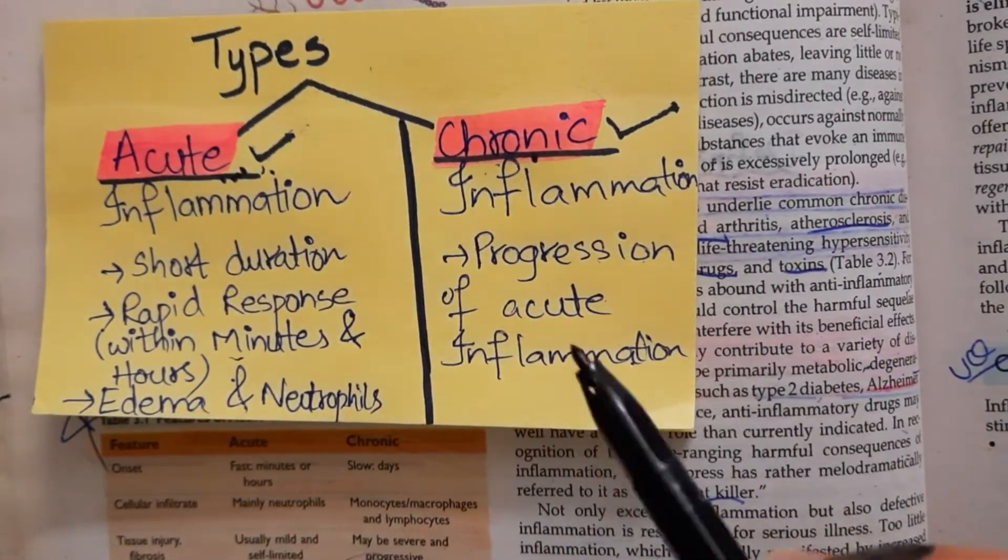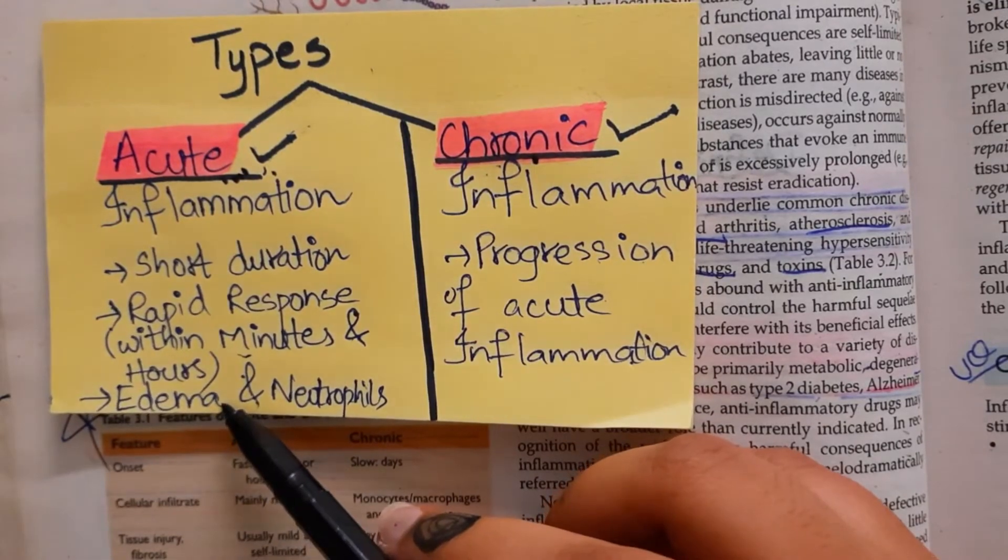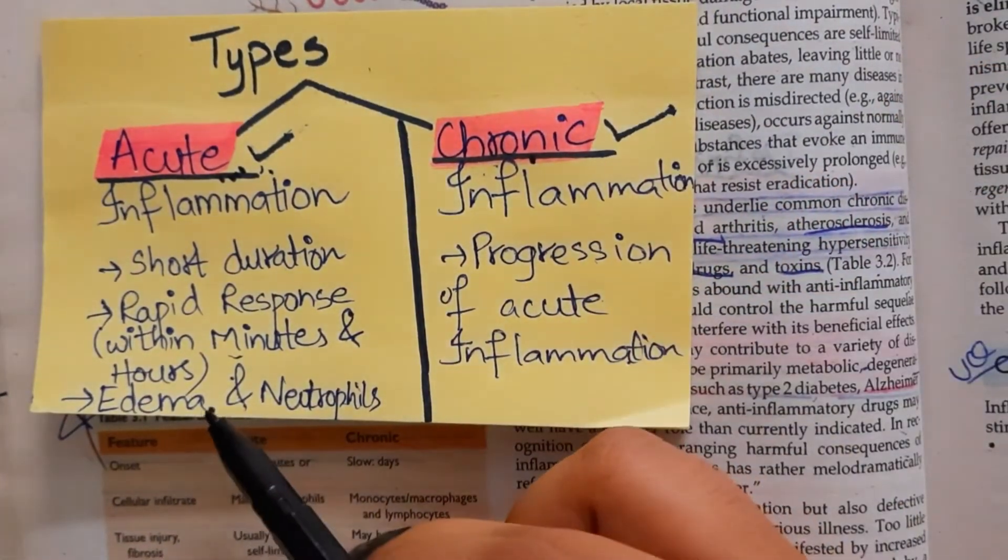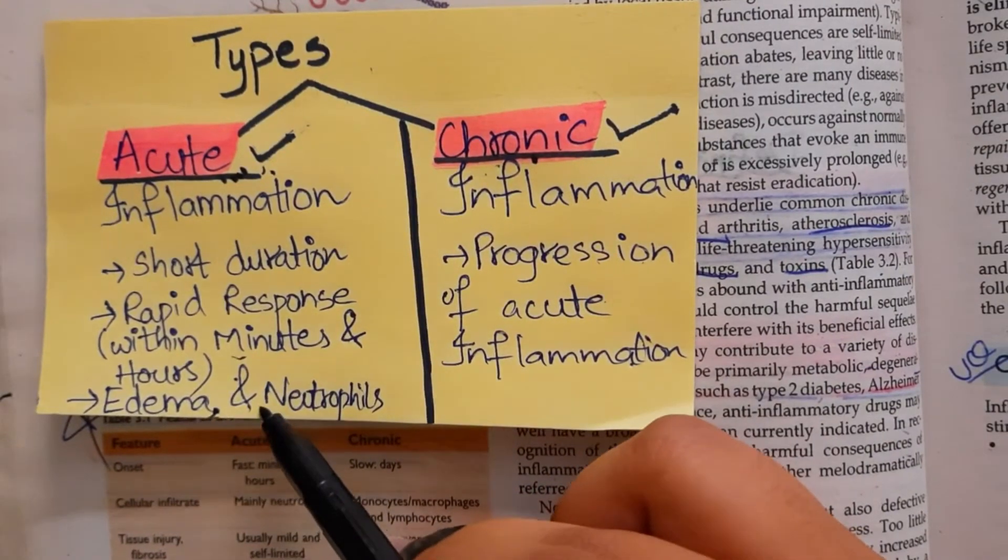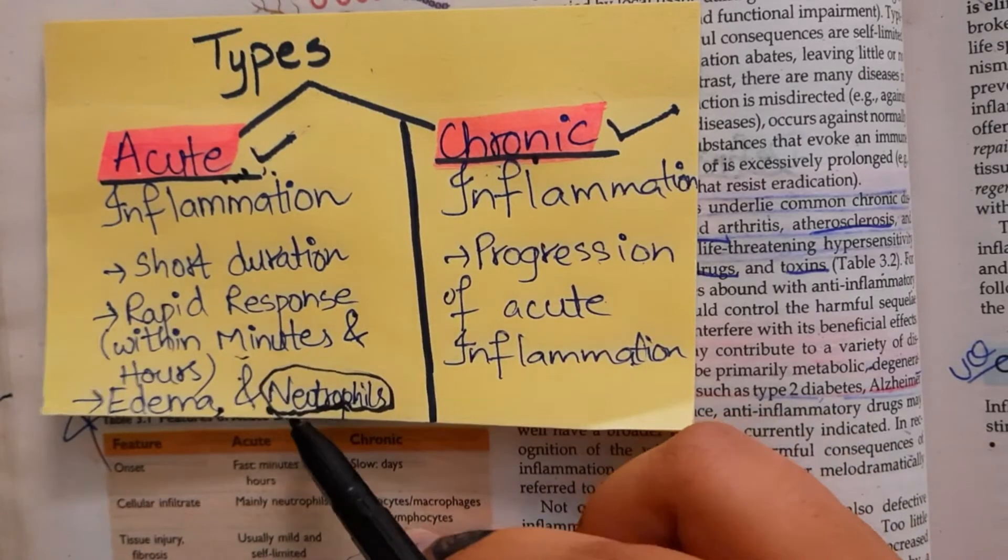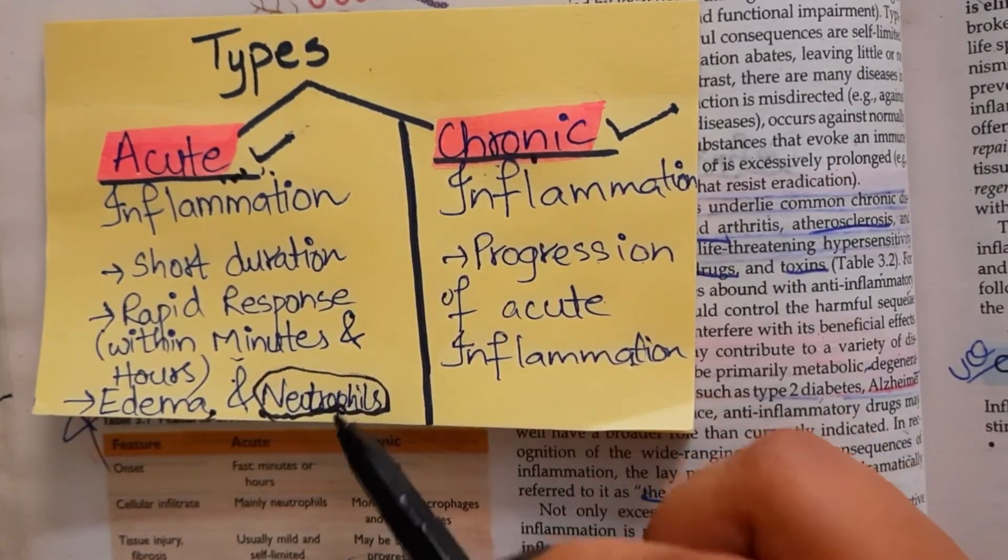It occurs for very short duration and what happens is that edema, or like some fluid flows out of it, edema occurs. And you can recognize acute inflammation by neutrophils. Many neutrophils are found in acute inflammation.